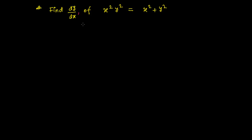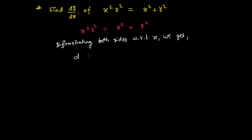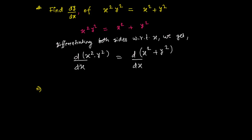We write the equation and differentiate both sides with respect to x. The equation is x²y² = x² + y², so differentiating both sides: derivative of x²·y² with respect to x on the left, and derivative of x² + y² with respect to x on the right. Here, x² is one function and y² is another function, so we apply the product rule on the left side.